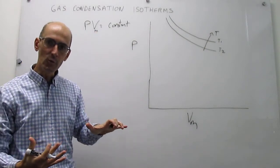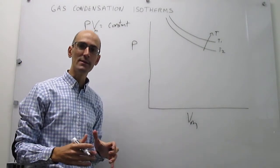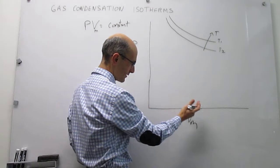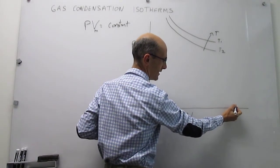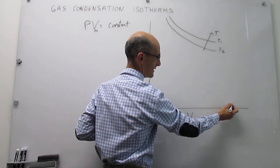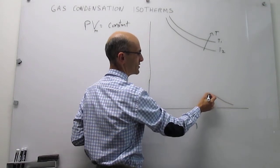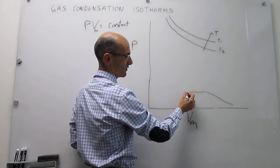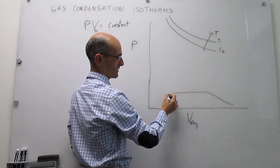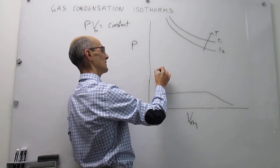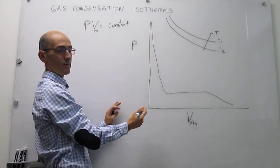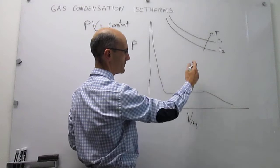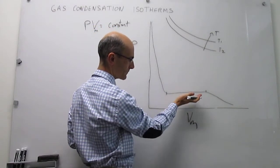Now we can go to much lower temperatures and start to observe the phenomenon of condensation. You can have a gas at low pressure and really high molar volume at a lower temperature, and that isotherm looks different: it increases as usual at first, but then reaches a point where the molar volume decreases with changing pressure until there is a turnover in the curve. After that, reducing the molar volume further requires applying a huge amount of pressure. There is a region of zero slope which is what condensation really is.